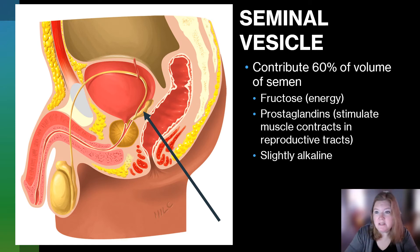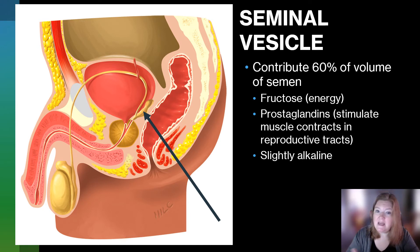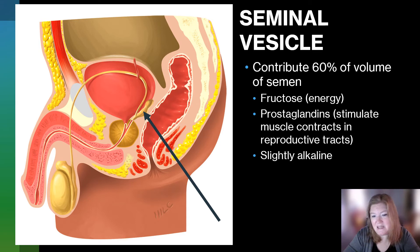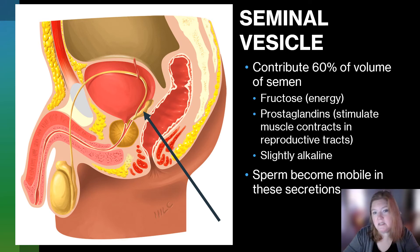We have the seminal vesicle. It is going to contribute most of the volume of semen — about 60% — and it sits behind the bladder. What is in the fluid it produces? Fructose for energy, because sperm don't have any energy stored on their own and need to absorb nutrients from their environment. It has prostaglandins, which stimulate muscle contractions in the reproductive tract before and after sperm are released. It's also slightly alkaline, which is a survival technique because the vaginal canal is very acidic, which would be detrimental to sperm. Sperm become mobile in these secretions.